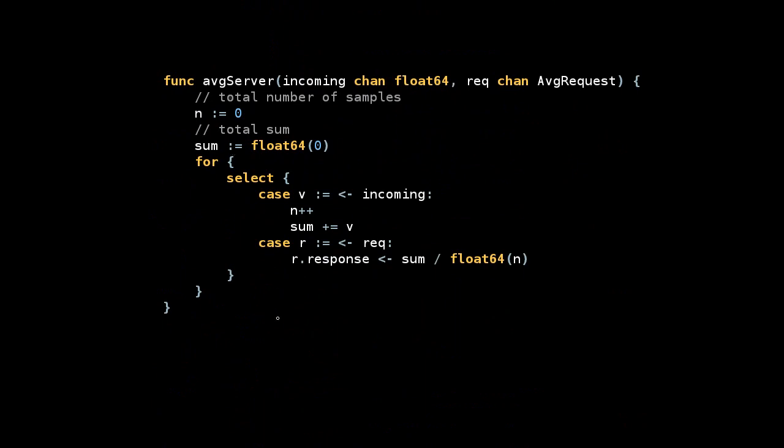Here's an example that defines a little server that listens on two channels. We've got our average server in a little box here, and it has two arguments. There's an incoming channel that contains floats, and it has requests coming in on another channel.